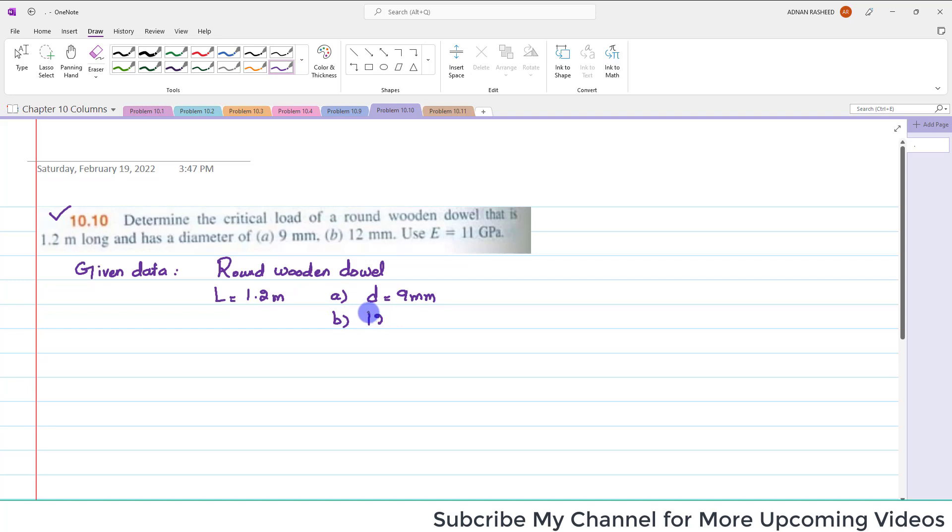And in part B it is given as diameter is equal to 12 mm. Also, the value of E is the same, which is 11 gigapascals. So what we have to find?